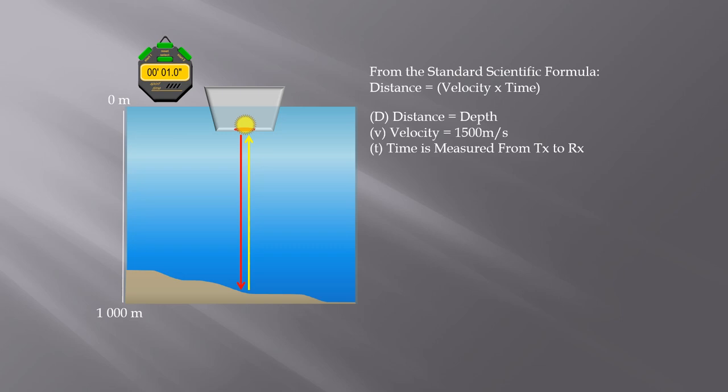We measure the time using the timer and then you can see how we calculate the measured depth. The distance is the total distance traveled; time is measured from transmission to reception, and hence the depth of the water or the measured depth is half the distance traveled.